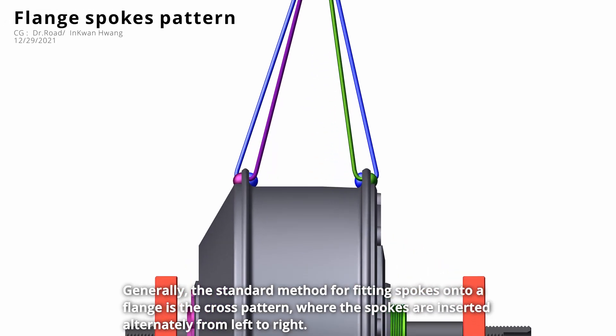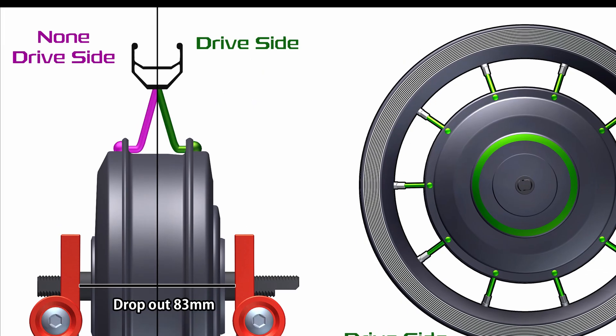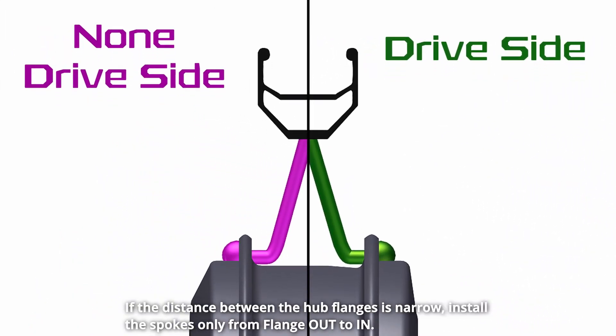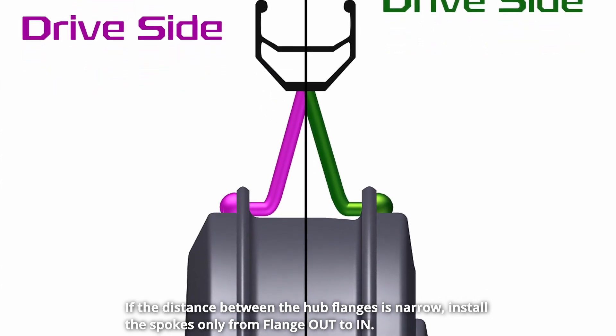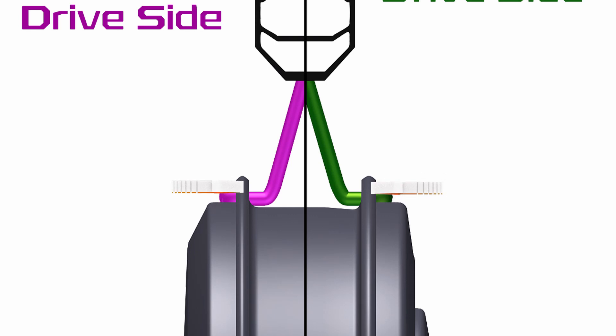Generally, the standard method for fitting spokes onto a flange is the cross pattern, where the spokes are inserted alternately from left to right. If the rim is too small or the hub flange is too large, the spokes will only be installed in one direction, from out to in on the flange.